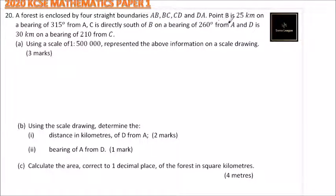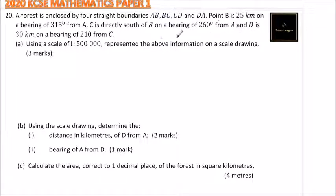Point B is 25 km on a bearing of 315° from A. C is directly south of B and on a bearing of 260° from A. D is 30 km on a bearing of 210° from C.